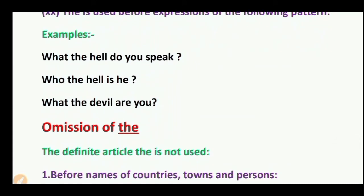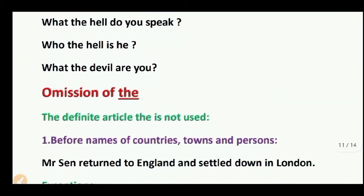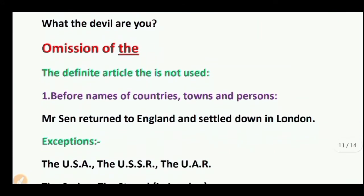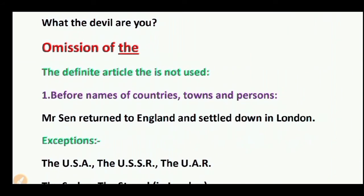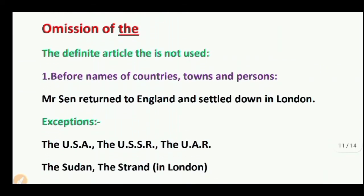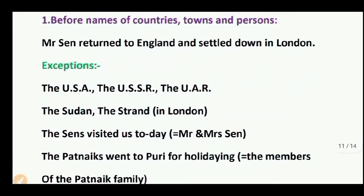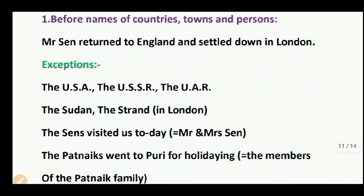Now we come to the omission of the article 'the' — when we cannot use the definite or indefinite article. The definite article 'the' is not used in the following cases. First: before names of countries, towns, and persons. Example: Mr. Sen returned to England and settled down in London. Note: the USA, the USSR, the UAE, the Sudan are exceptions. The Sens visited us today — here 'the Sens' means Mr. and Mrs. Sen as a family.